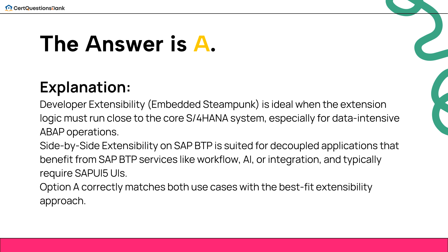The answer is A. Developer extensibility (embedded steampunk) is ideal when the extension logic must run close to the core S/4HANA system, especially for data-intensive ABAP operations. Side-by-side extensibility on SAP BTP is suited for decoupled applications that benefit from SAP BTP services like workflow, AI, or integration, and typically require SAP UI5 UIs. Option A correctly matches both use cases with the best-fit extensibility approach.